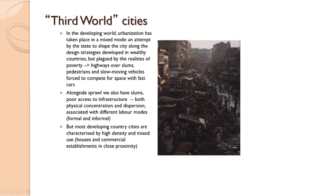What happens in the global south, or conventionally known as the third world, involves several other factors. In the developing world, urbanization has taken place largely in a mixed mode. There are lots of legacies over time shaping those cities. One of them is the state or government attempting to shape the city along design strategies developed in wealthy countries — a push towards more automobilization, more cars, more highways, less access for pedestrians, even though the bulk of road users tend to be pedestrians, people without access to cars, and bicyclists.